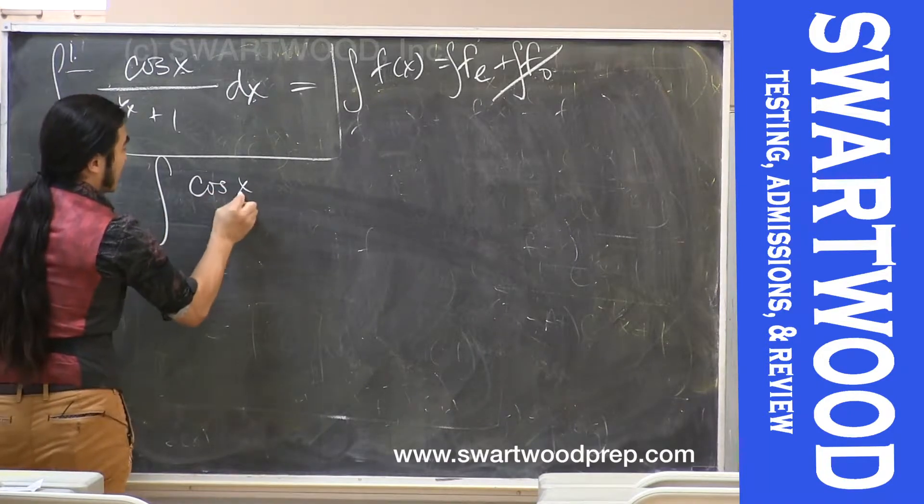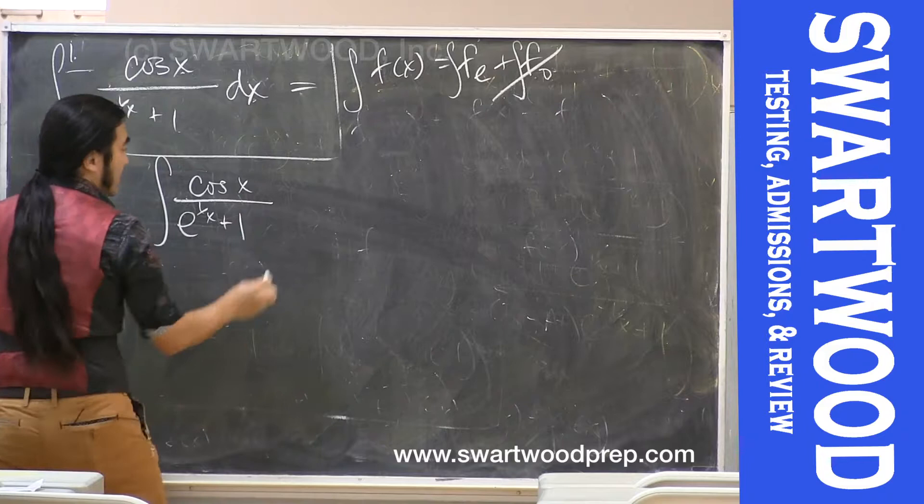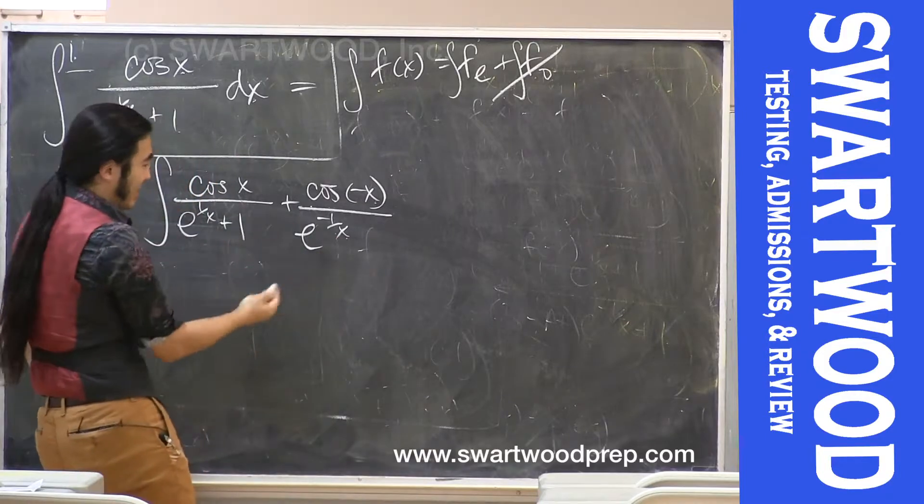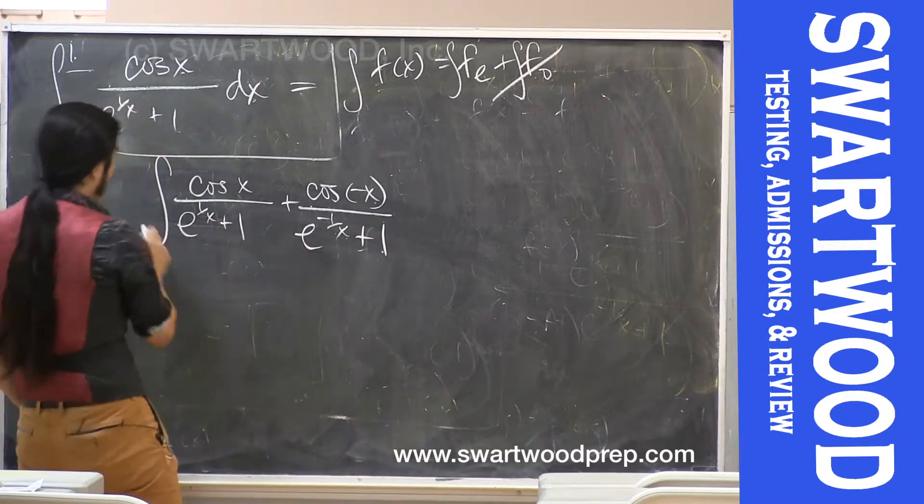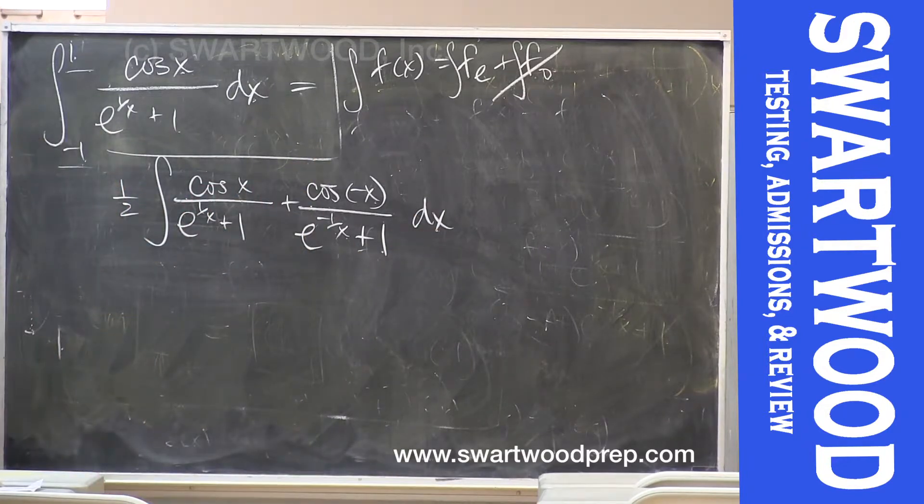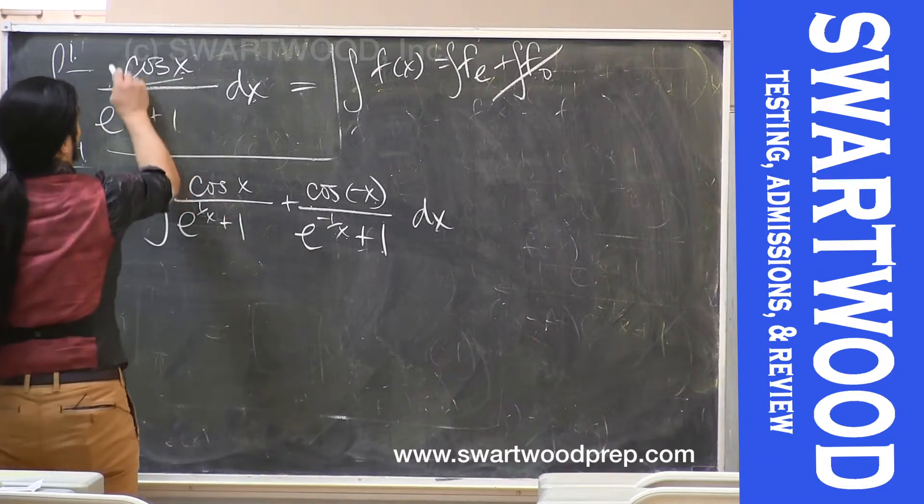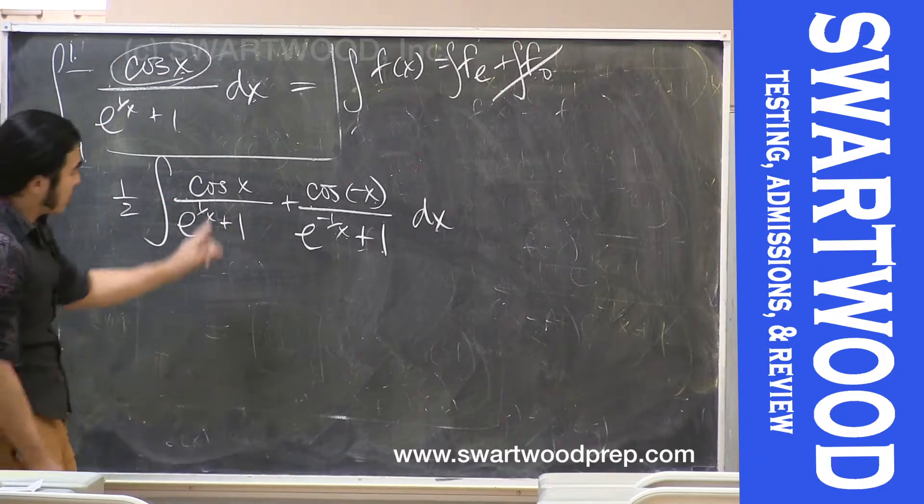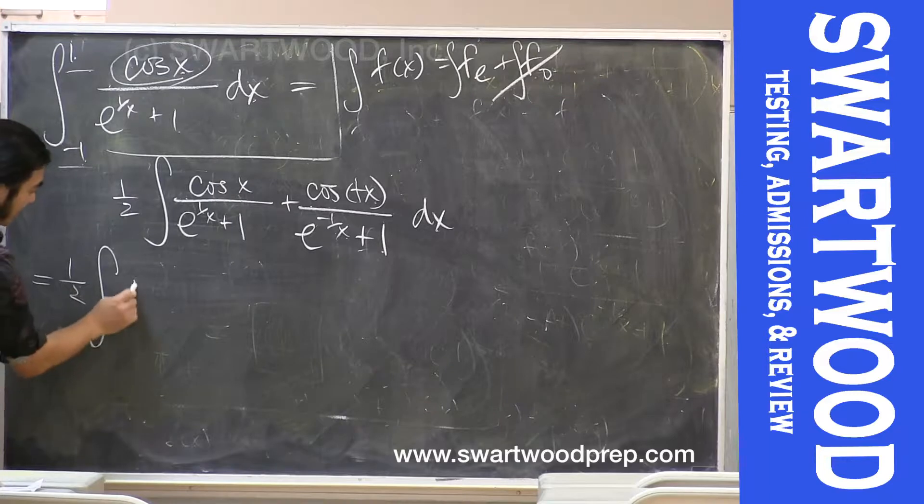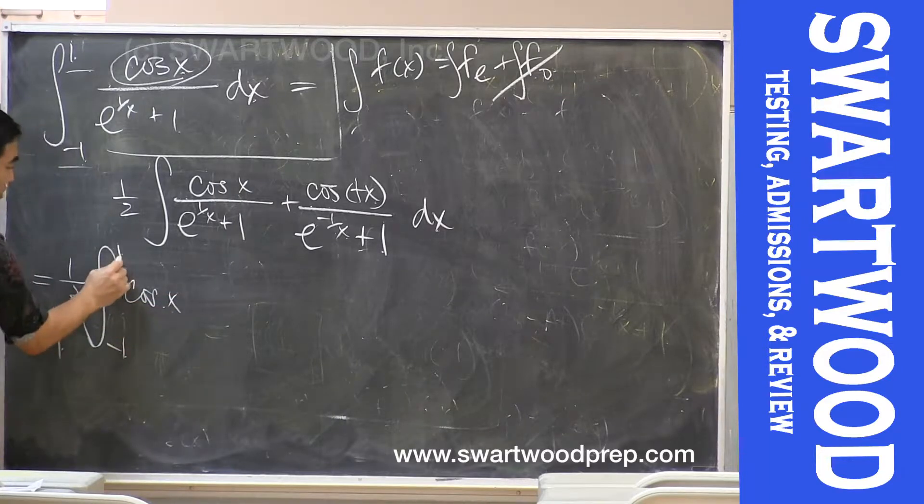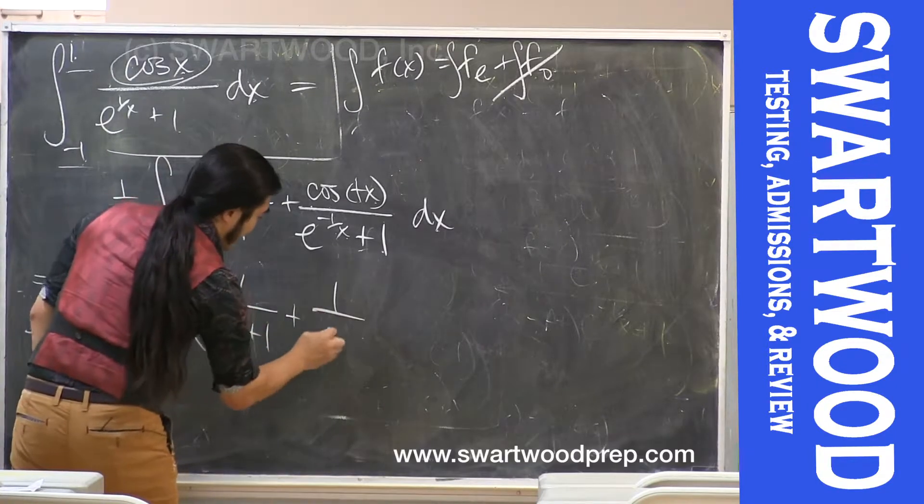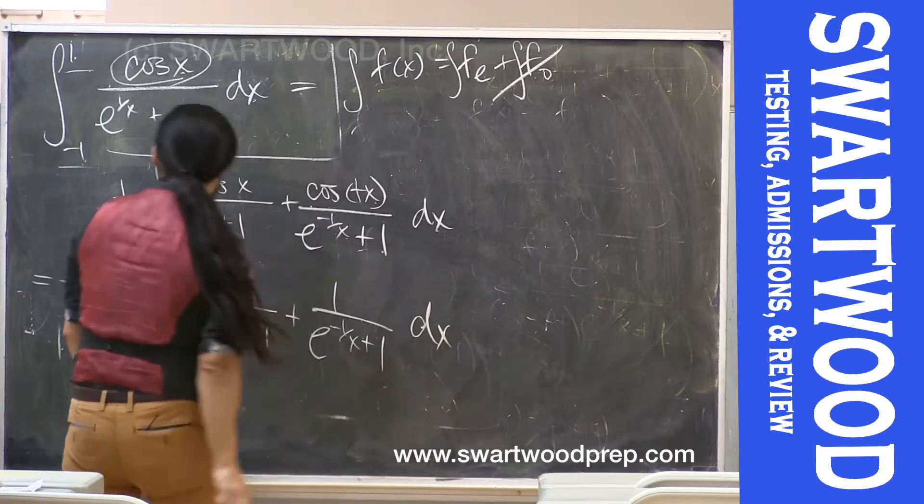So this guy is definitely cosine of x e to the 1 over x plus 1 plus cosine of negative x e to the negative 1 over x, or 1 over negative x, same thing, plus 1 divided by 2. I'm going to factor that 2 out over here. That was following our pattern, f of x plus f of negative x divided by 2, okay? All right, so the nice thing again though, and that's kind of a special requirement here, is that cosine is also even. So cosine of x and cosine of negative x are the same. We're going to factor that sucker out. So we're going to get again 1 half integral of cosine of x from negative 1 to 1. And what's left over? 1 over e to the 1 over x plus 1 plus 1 over e to negative 1 over x plus 1, okay?